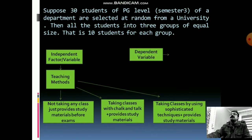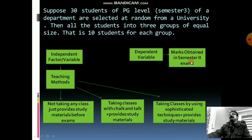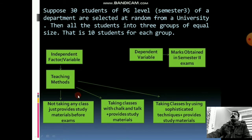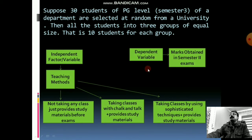The dependent variable in this case is the marks obtained in semester two. Since we have taken students of the third semester, naturally they already have results from semester two, which is why marks obtained in semester two is taken as the dependent variable. If we want to study whether there exists any difference in marks by giving three different treatments, we get the flavor of ANOVA — does there exist any difference in marks due to differences in teaching methods? This has already been explained in previous videos.